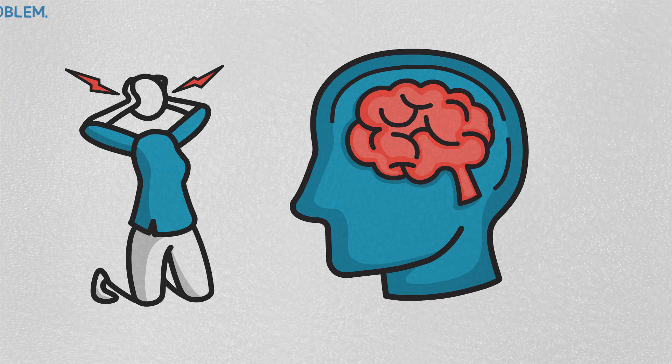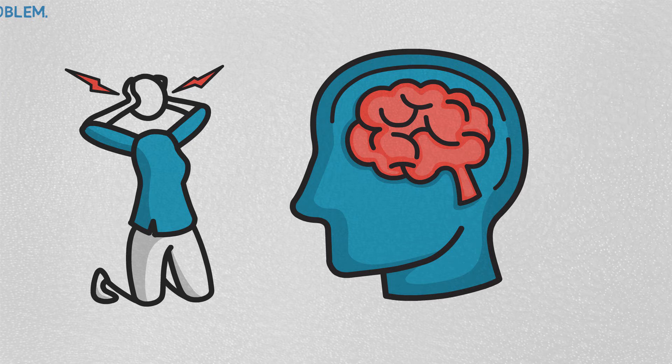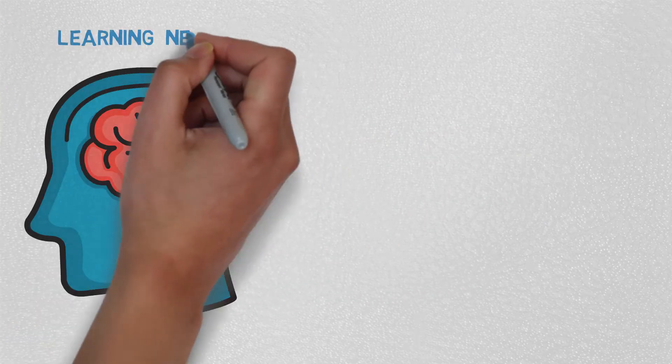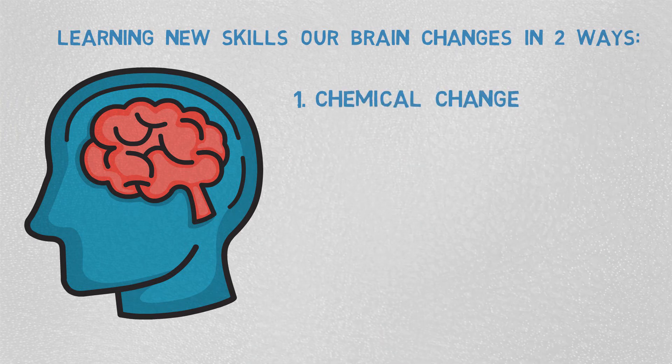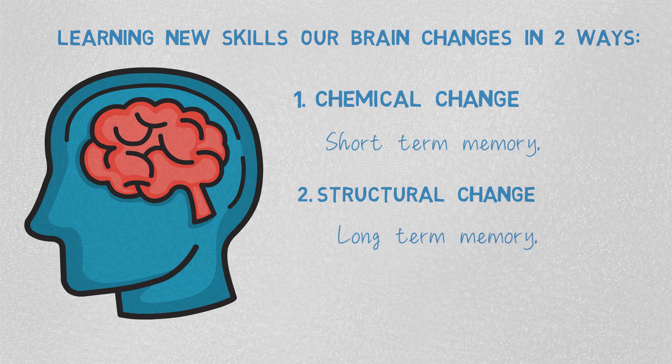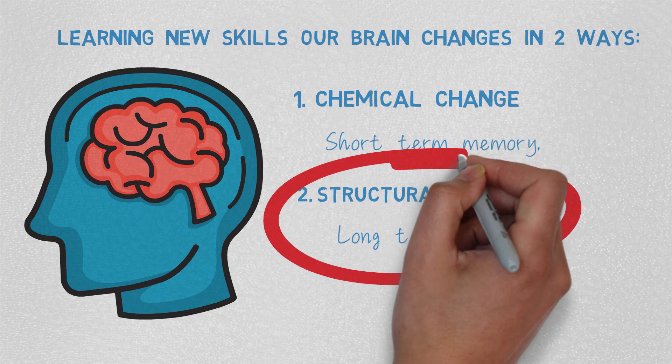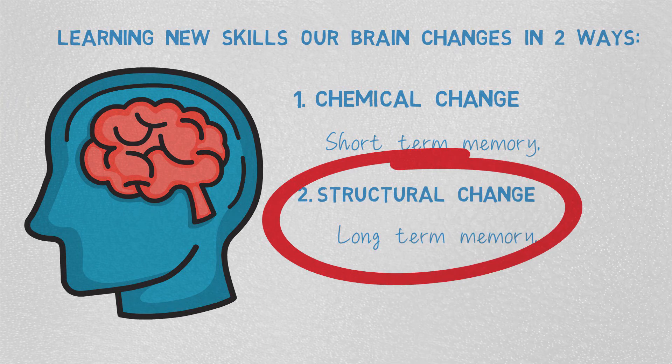While learning new skills, our brain changes in two ways: chemical changes in the brain, which is about short-term memory, and structural changes of the brain, which is about forming long-term memory. Here I want to talk only about the second type of change, which is the result of our experience. I'm not a neurologist, so from what I understand, this is how the brain changes when we learn new skills.